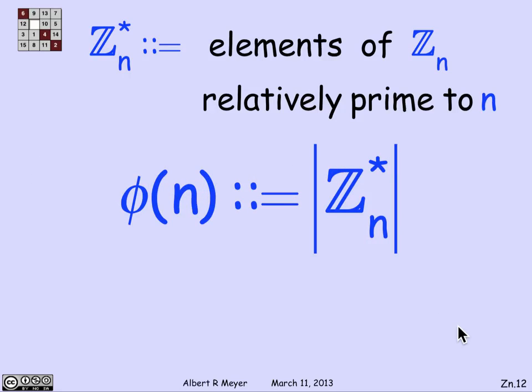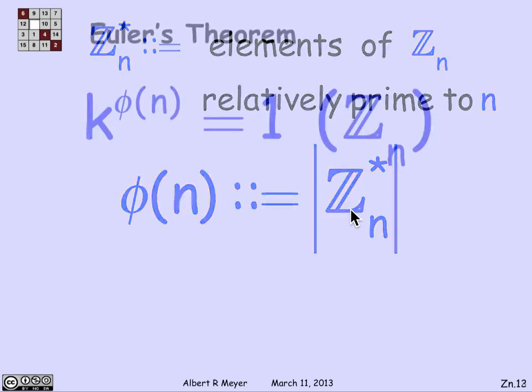All of these three things are equivalent. They give you the sense that Z_n star is a kind of robust subset of Z_n that you want to be thinking about. And in fact, it's very valuable to be paying attention to. What else do we know about Z_n star? Well, the definition of phi of n was the number of integers in the interval from 0 to n that are relatively prime to n. Of course, that's exactly the size of Z_n star. So phi of n is simply the size of that collection of elements.